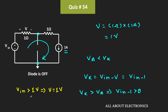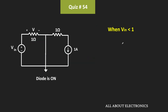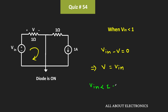From this we can say that whenever Vin is less than 1 volt, the diode will be in the on condition. That means whenever Vin is less than 1 volt, the diode is in the on condition and it will act as a short circuit because the diode is the ideal diode. So in this condition, if we apply KVL in this loop, we can say that Vin − V = 0, or V is equal to Vin.